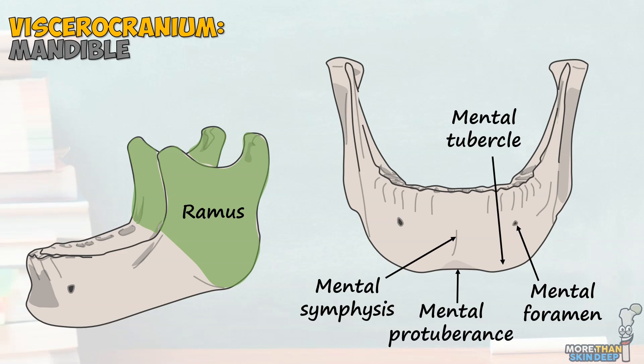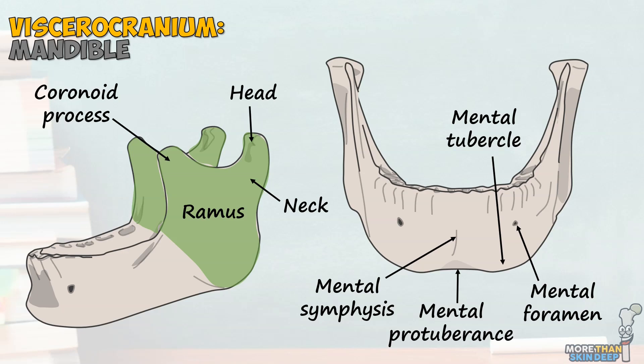The rami are a little more complicated and split at their top into two sections. These are the coronoid process, which projects anteriorly to attach to the temporalis muscle, and the neck, which attaches to the lateral pterygoid muscle before continuing upwards to produce the head. The head is the part of the mandible that articulates with the temporal bone at the temporomandibular, or jaw, joint. This corner of the mandible is known as the angle, and these two bony protuberances are known as the oblique lines.